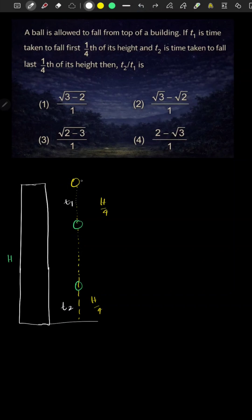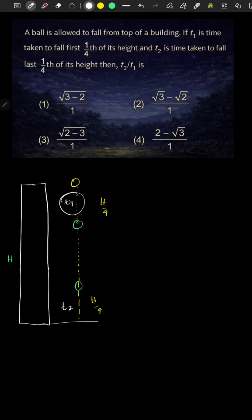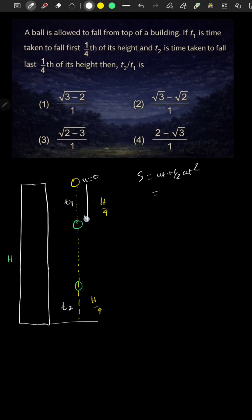If you drop a ball from height h, the first one-fourth of the height is covered at time t1, and the first one-fourth is covered at time t2. We can use the formula s = ut + ½at². u is 0 at time t1. The first quarter height, s = h/4.